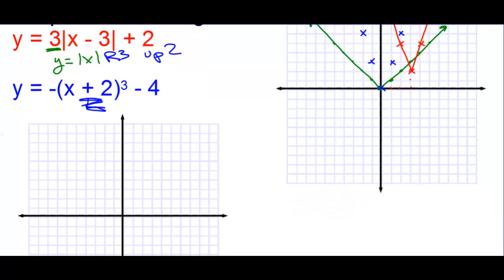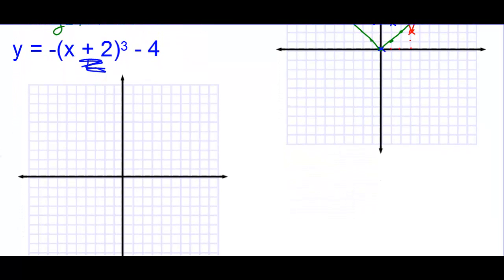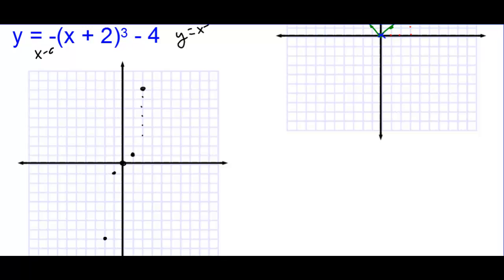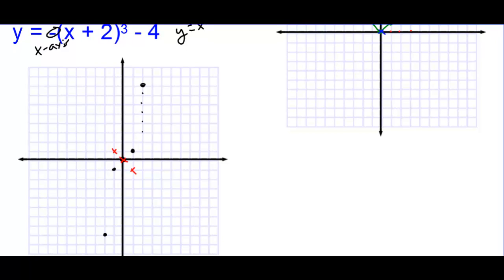Then we have y equals negative (x plus 2) to the third minus 4. The parent graph is y equals x to the third: (0,0), (1,1), (2,8), (negative 1, negative 1). Then we're going to reflect over the x-axis because of that negative. So 1 goes to negative 1, negative 1 goes to 1, the 0 stays, positive 8 goes to negative 8, and negative 8 pops up to 8. There's reflect over the x-axis.